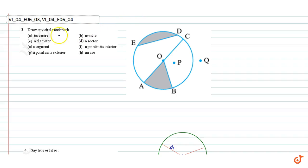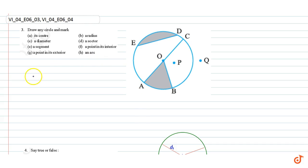In this video we are going to solve question number 3 and 4. Question number 3: draw a circle and mark its center. We have drawn a circle with center as O and diameter as AC.